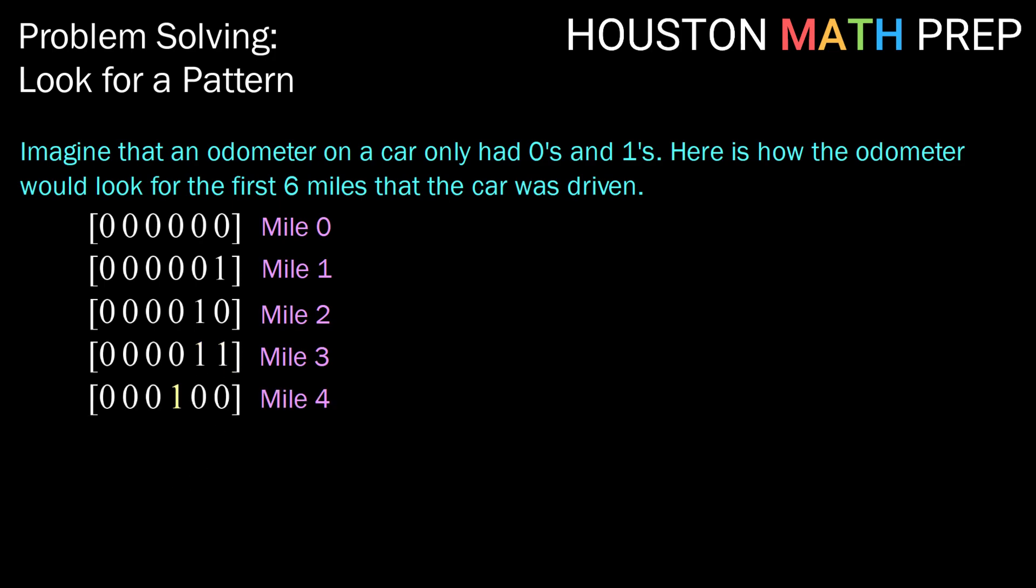For mile four, we jump over. For mile five, we have a one in the third spot and the first spot. And for mile six, we have a one in the first and second spot.